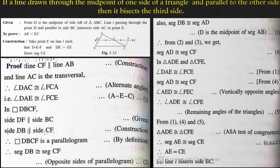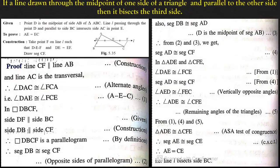Next is the converse of the previous theorem. The converse says: if a line is drawn through the midpoint of one side of a triangle and parallel to another side, then it bisects the third side.